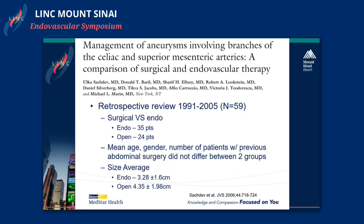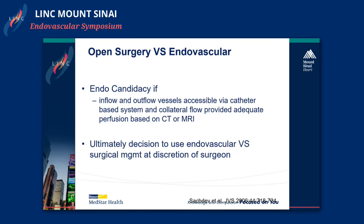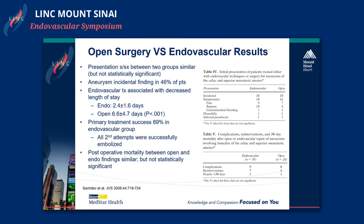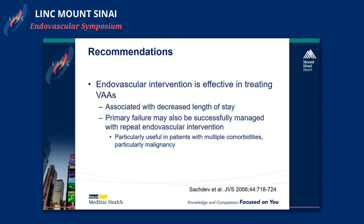The last paper is actually from here — from Dr. Marin and Dr. Sachsev. They looked at their experience with surgical versus endovascular, examining 59 patients — about 35 were endo, 24 were open. The average size of the endo group was a little bit smaller than the open aneurysm. Patients were endovascular candidates if they had good inflow and outflow vessels that were accessible and good collateral flow; ultimately the decision was left at the discretion of the surgeon. Endovascular treatment had a decreased length of stay — 2 days versus 6 days for open repair. Primary treatment success was 89% in the endovascular group, but all second attempts were successfully embolized. Postoperative mortality was similar but not statistically significant. Their conclusions were that endovascular intervention is effective in treating visceral artery aneurysms, is associated with decreased length of stay, and primary failure may be managed successfully with repeat endovascular intervention.